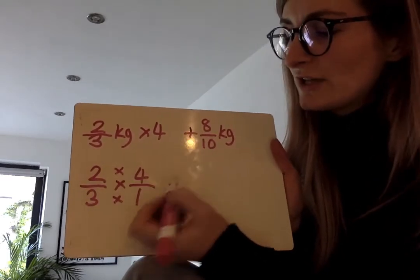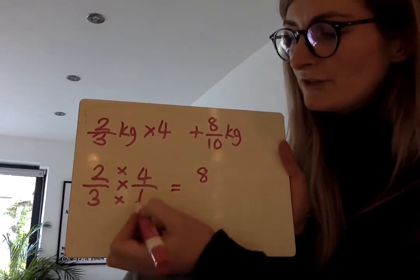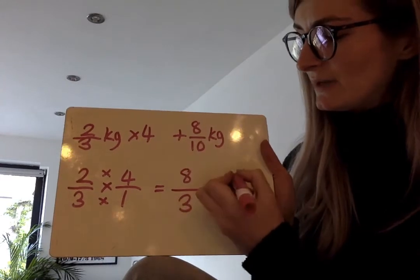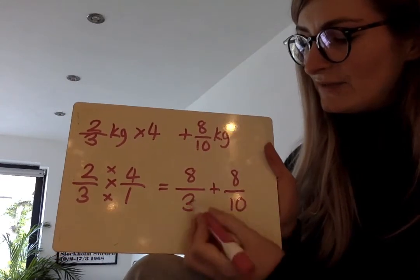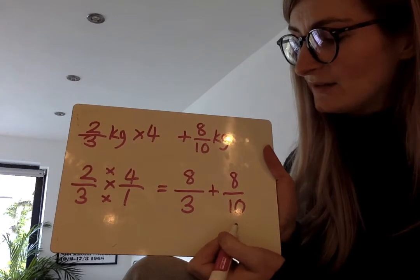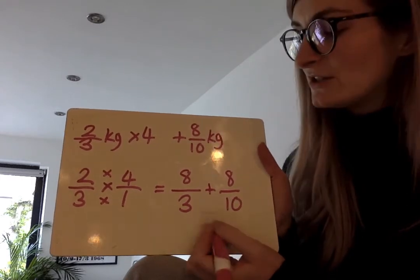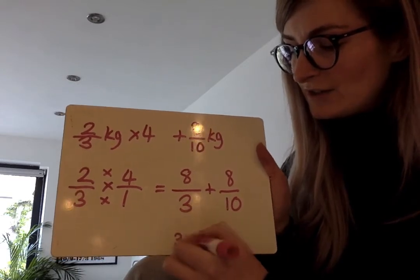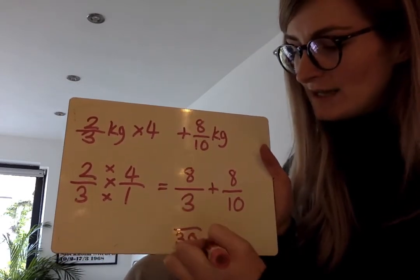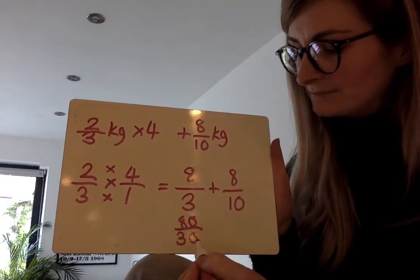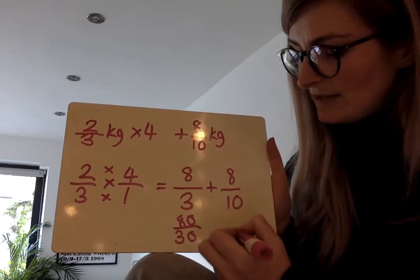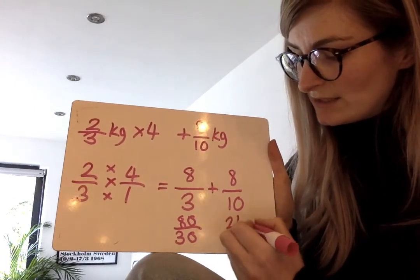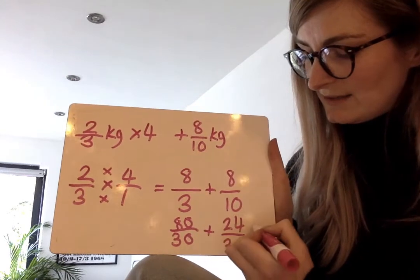We talked on zoom before about two thirds times four. We need to turn four into a fraction. Four whole ones is the same as four ones. And then we can just time straight through. Times in fractions is really easy. Two times four is eight, three times one is three. So that's this part done. And then I need to add on my eight tenths. I can't add these because we have different denominators. So I'm going to find the lowest common denominator which is going to be 30.